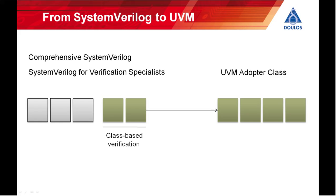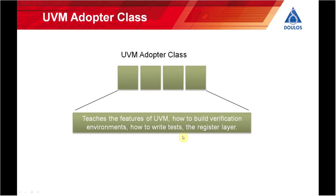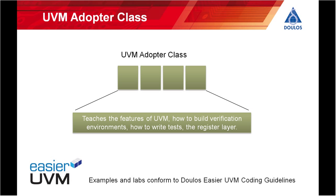This approach works even for people coming from a hardware design background, provided they don't try to compress the training too much. The UVM Adopter class itself is a very intense four-day training class that teaches everything you need to get started with UVM, including best practice and reuse so you can start using UVM properly from the start. Most examples and exercise files conform to the Doulos Easier UVM coding guidelines, so you can start using them immediately after the class.